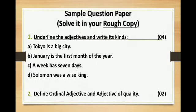Now children, here is one sample question paper for you all. You have to do this sample question paper in your rough copy. I am repeating: you have to solve this sample question paper in your rough copy. Question 1 (four marks): Underline the adjectives and write its kind. First: Tokyo is a big city. Second: January is the first month of the year. Third: a week has seven days. Fourth: Solomon was a wise king.